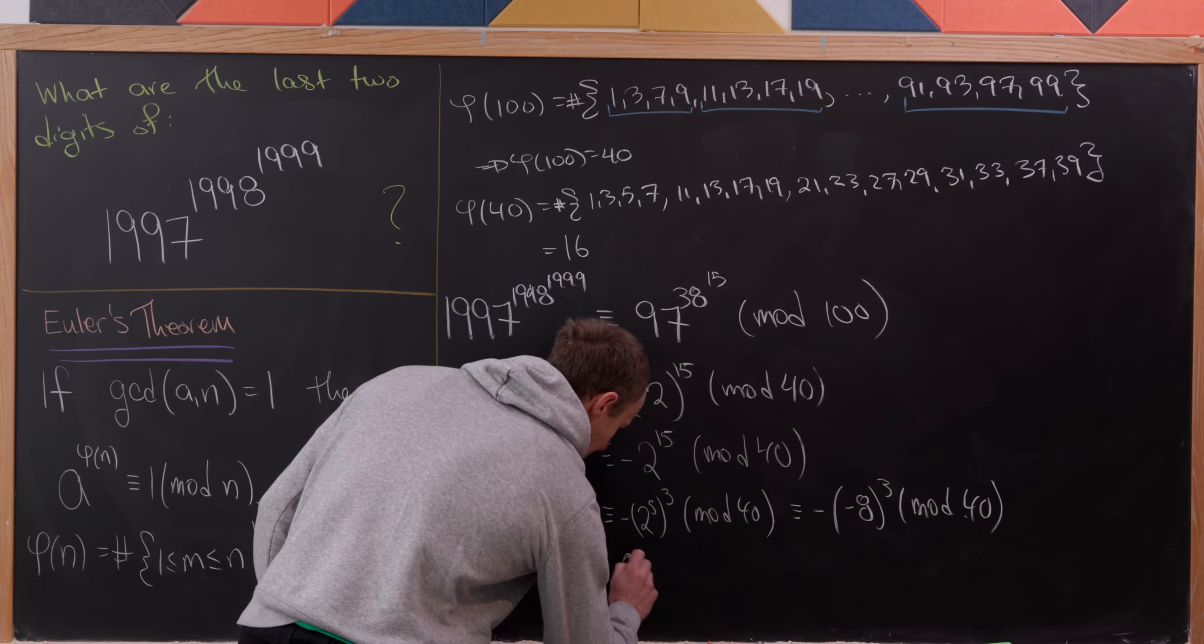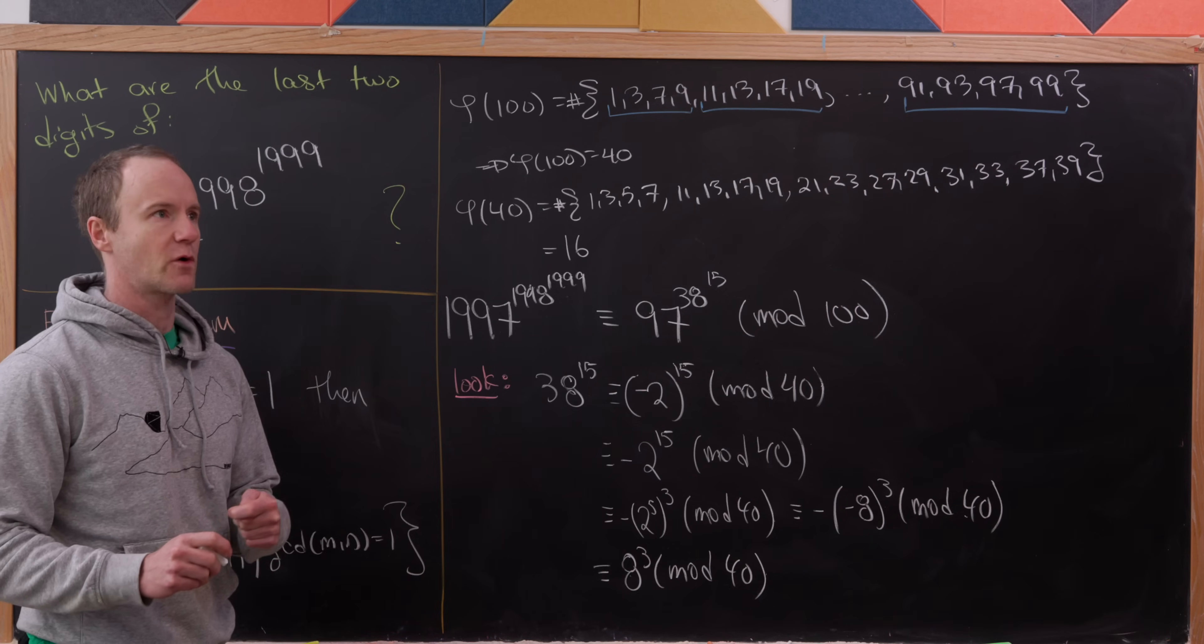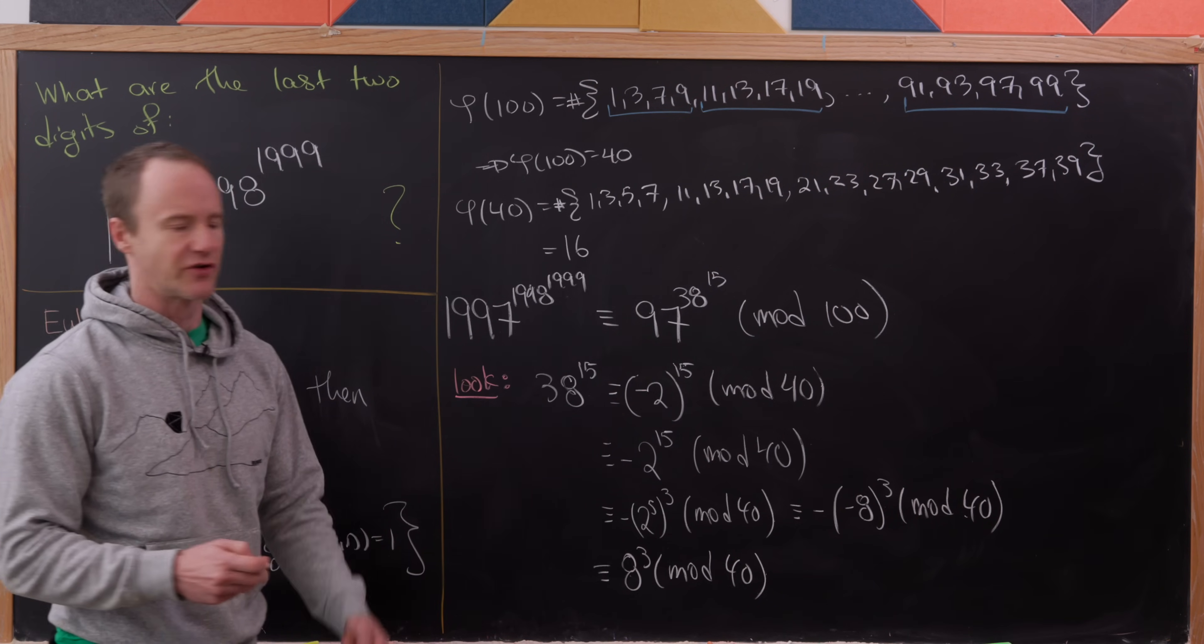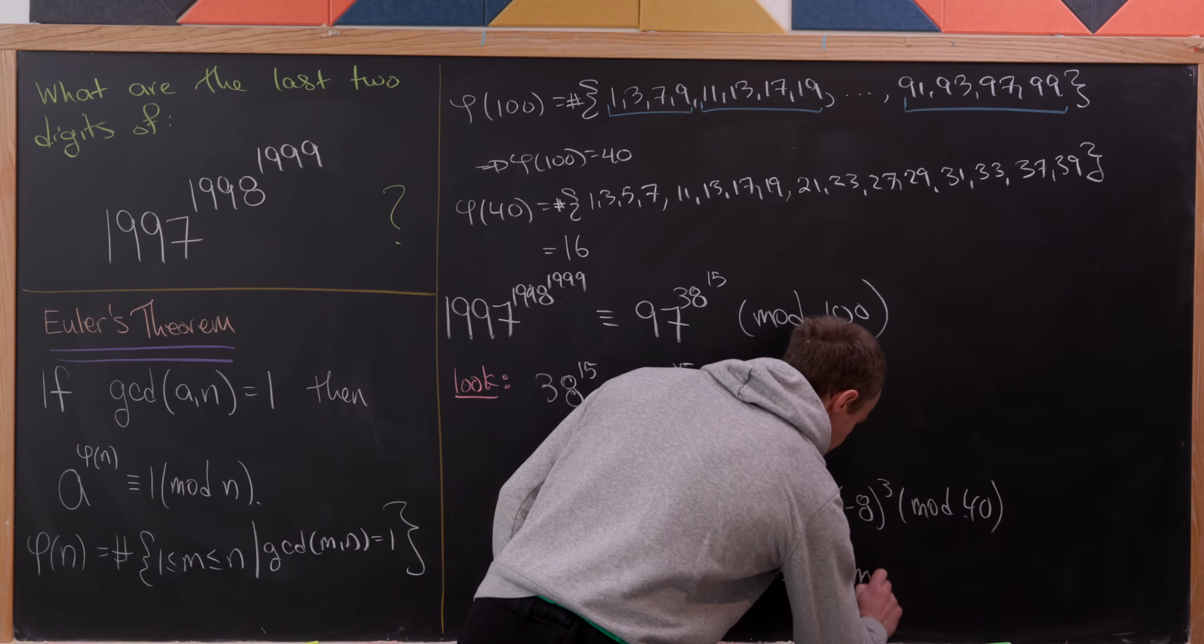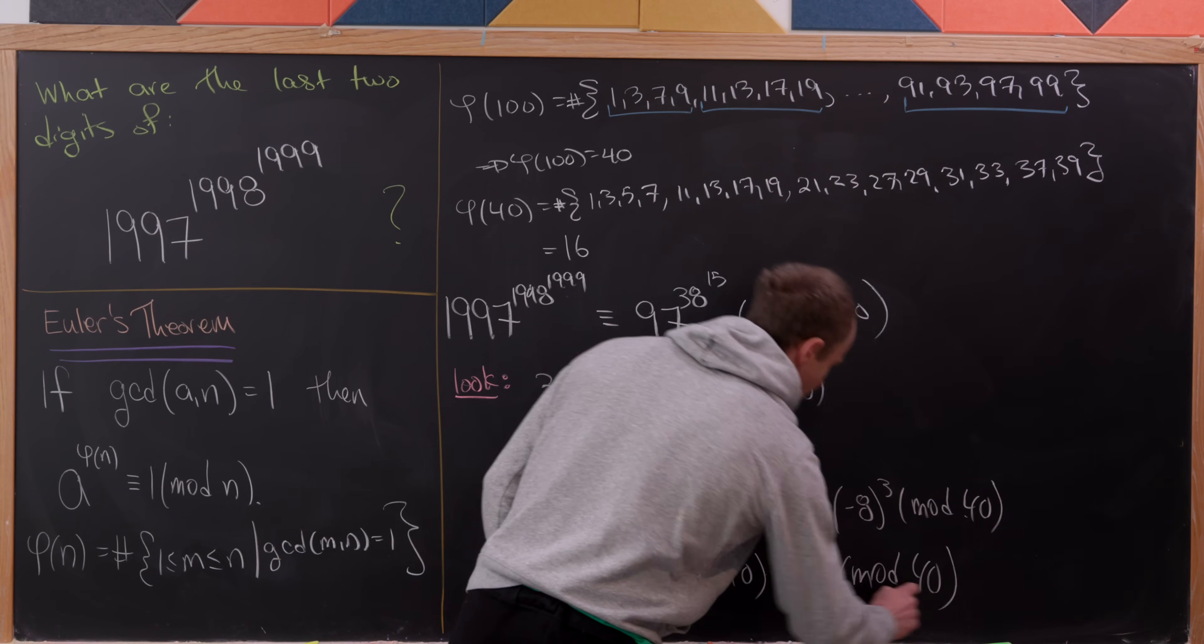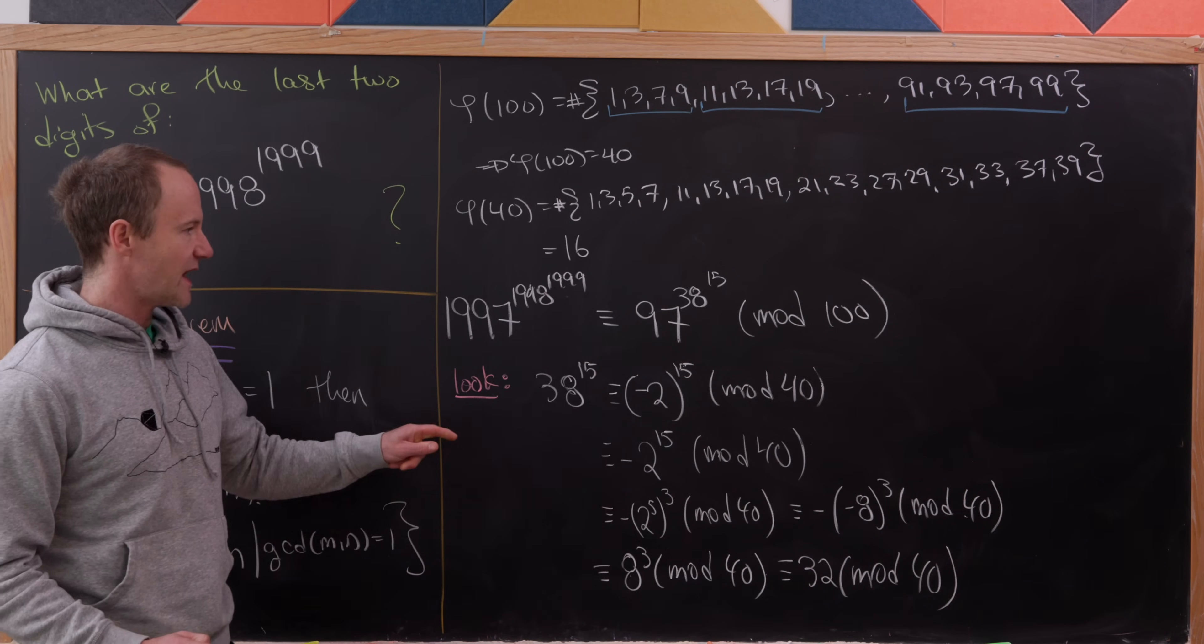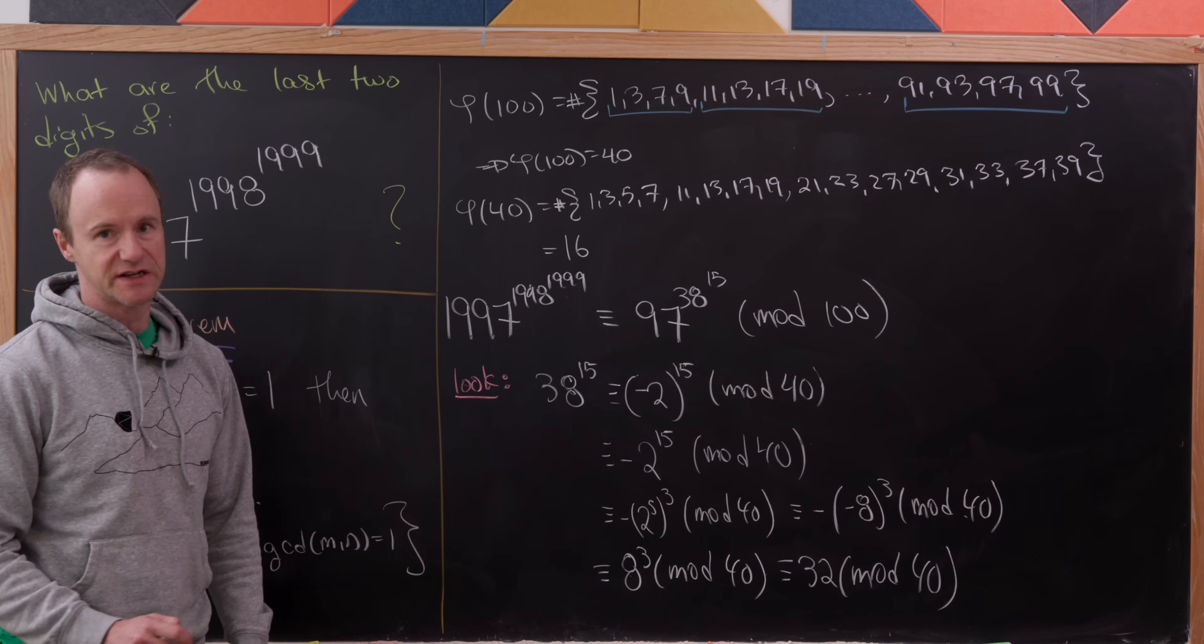We've got 8 cubed modulo 40. It's pretty straightforward to check that 8 cubed is in fact equal to 32 mod 40. So this is congruent to 32 modulo 40. That means we can replace this 38 to the 15 with simply 32.